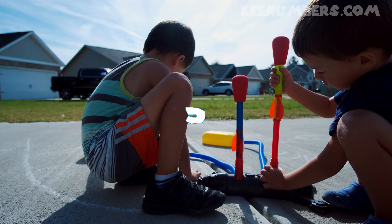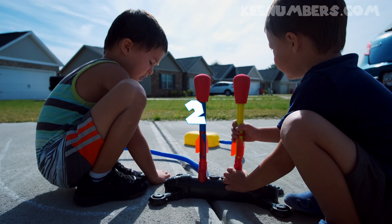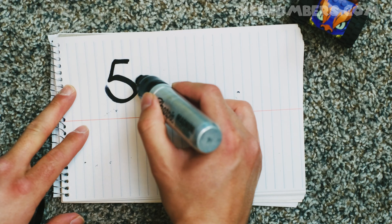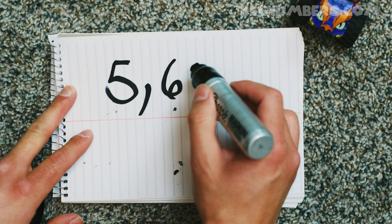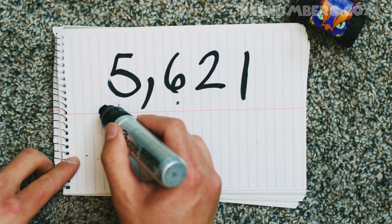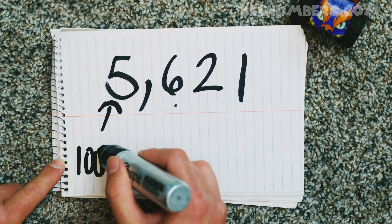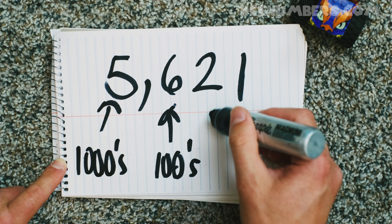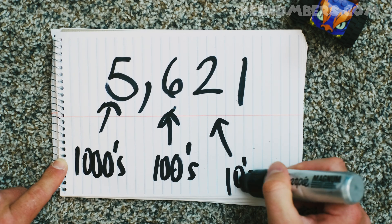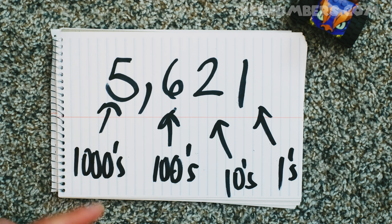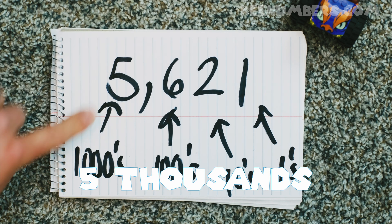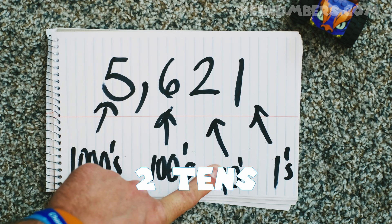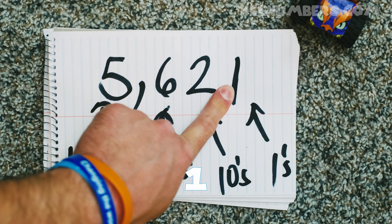Five thousand six hundred and twenty-one: the 5 is in the one thousands place, the 6 is in the hundreds place, the 2 is in the tens place, and the 1 is in the ones place. So we have five one-thousands, six one-hundreds, two tens, and how many ones? Just one.